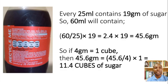So remember that we said 4 grams of sugar equal to 1 cube of sugar. Now, how do we calculate the number of cubes of sugar that we have in 45.6 grams in this 60cl bottle? So this is what we do. If 4 grams equal to 1 cube, then 45.6 grams equal to (45.6/4) × 1 cube, which would give us 11.4 cubes, approximately 11 cubes of sugar.